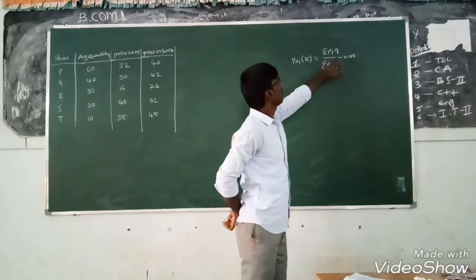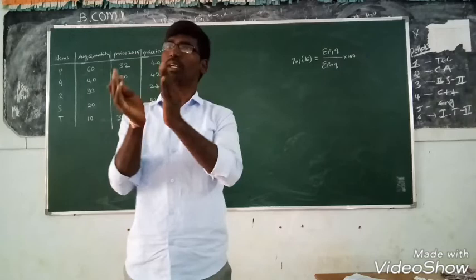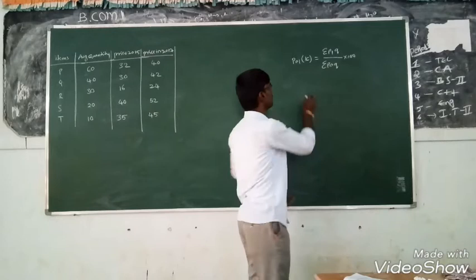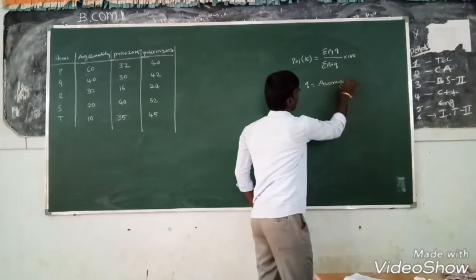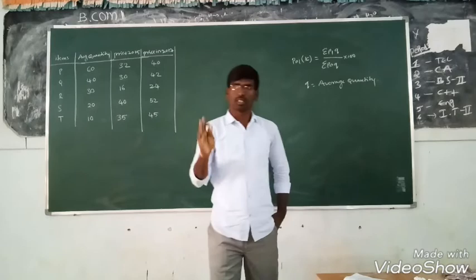Here in the formula given by Kelly's, he given only Q, only quantity. He didn't mention what is the base year quantity or current year quantity. He mentioned only quantity, so here Q determines average quantity.